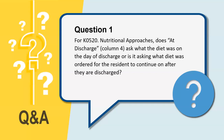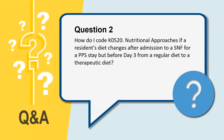Our second question: how do I code K0520 Nutritional Approaches if a resident's diet changes after admission to a SNF for a PPS stay, but before day three, from a regular diet to a therapeutic diet? For the new column on admission, one would check all nutritional approaches performed during the first three days of the SNF PPS stay. Therefore, if after admission a new order was received and the resident was started on a therapeutic diet in the first three days of the SNF PPS stay, the therapeutic diet would be checked in Column 1.